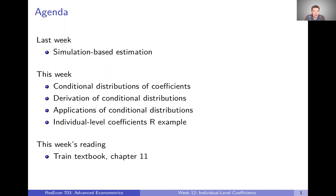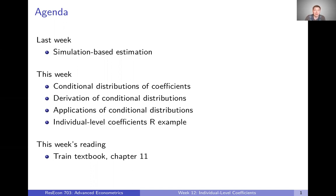Specifically, what we're going to talk about this week are conditional distributions of coefficients. We'll first talk about that broadly, then derive what we mean by conditional distributions of coefficients and how to represent them mathematically, then talk about applications — things like getting all the way to individual level coefficients. Each topic will be its own video, and in class we'll work through an R example. This week's material coincides with chapter 11 of the Train textbook.